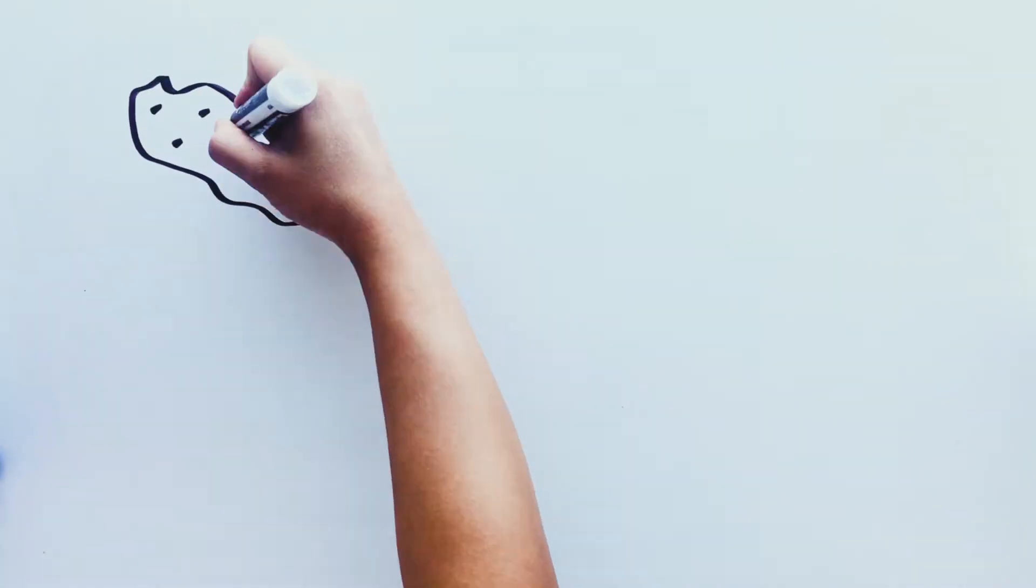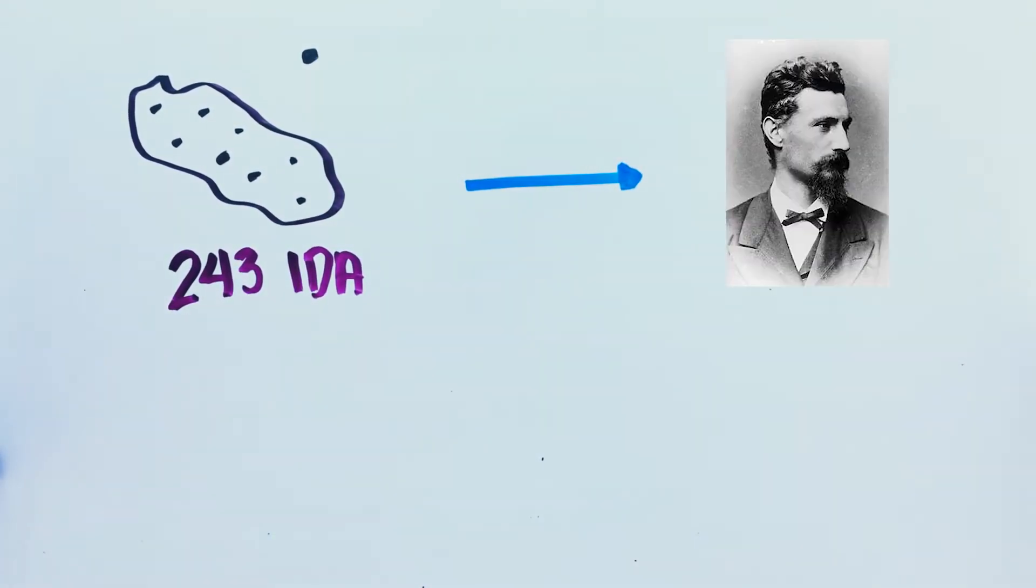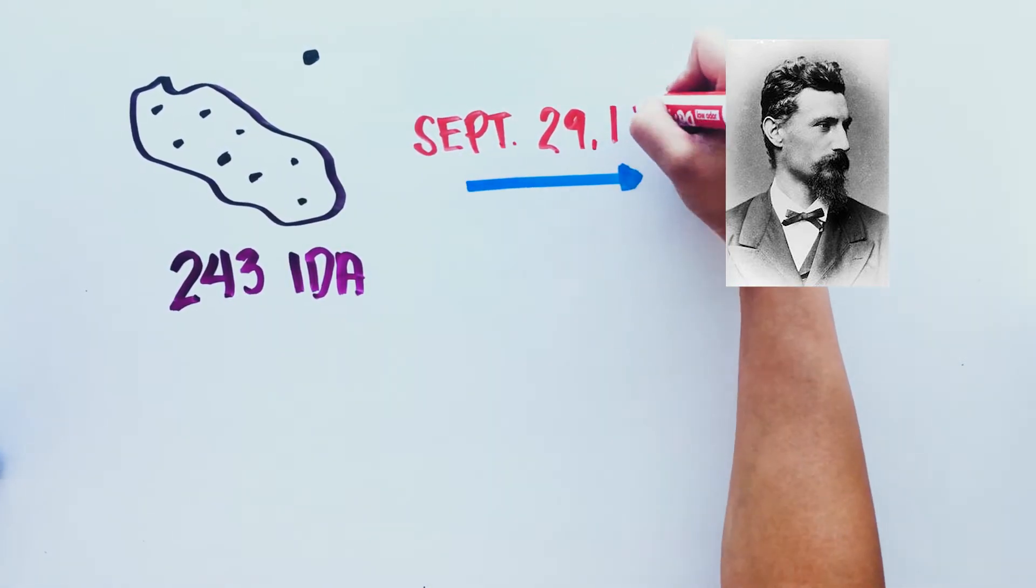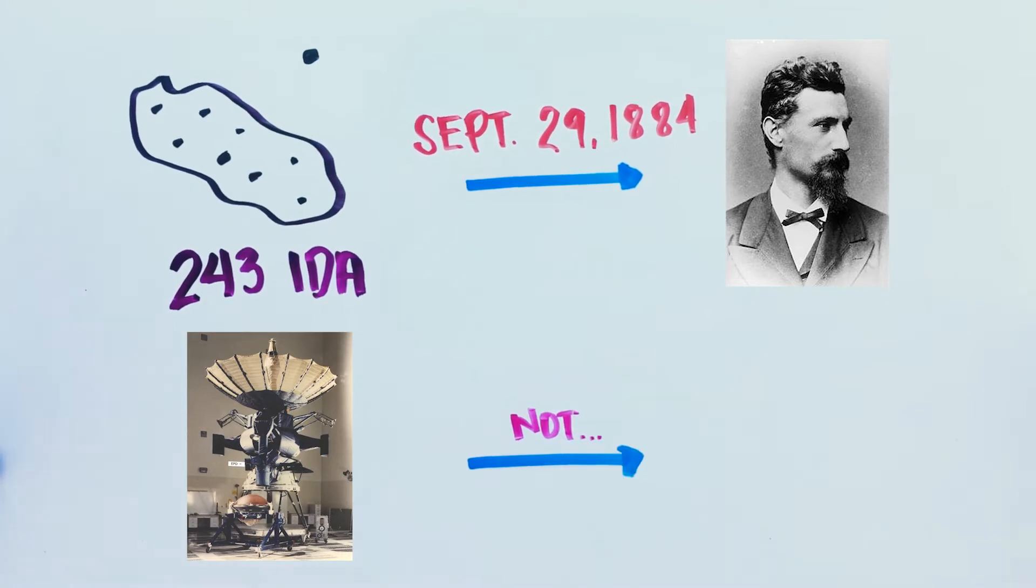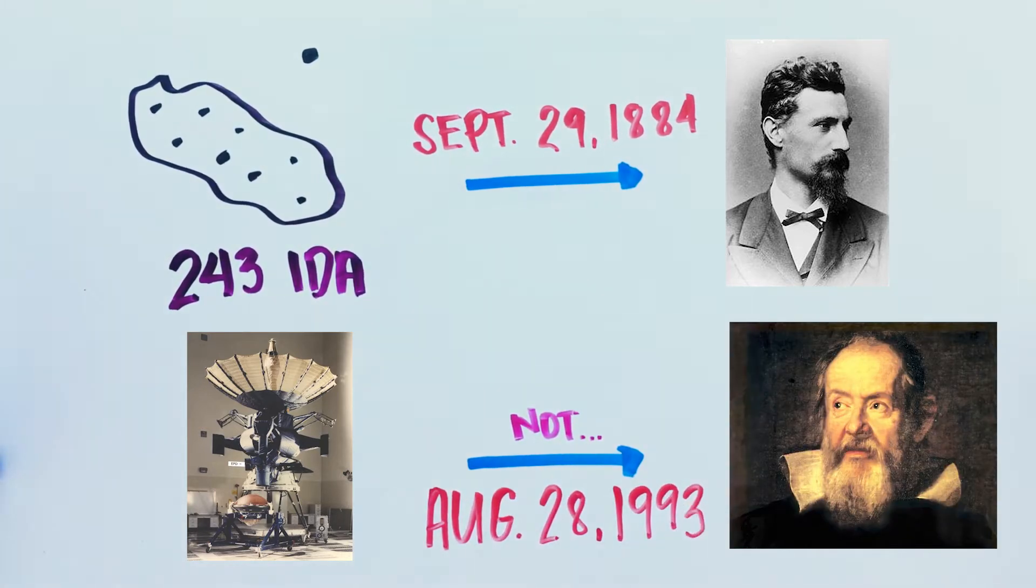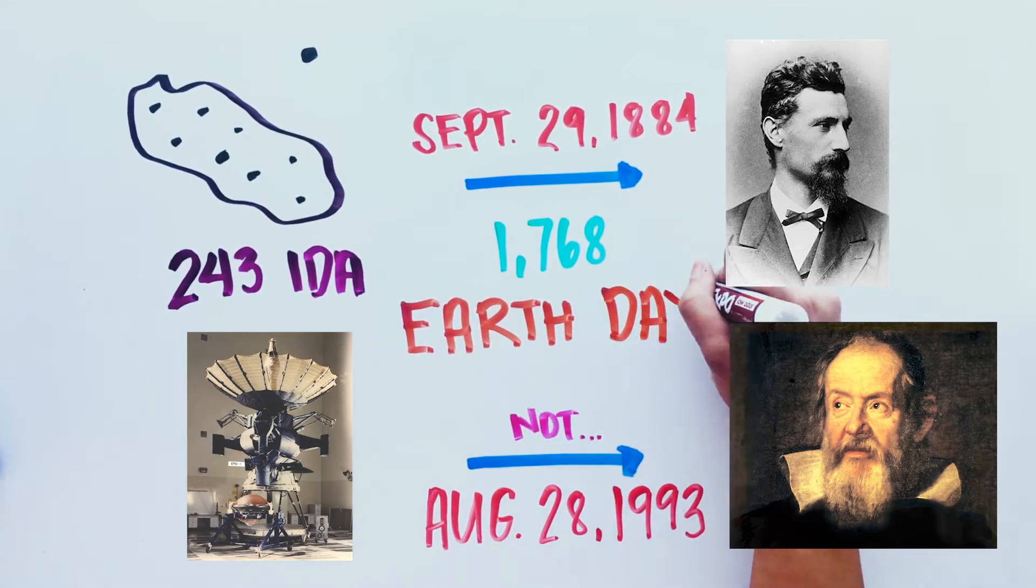There is an asteroid that has its own moon. 243 Ida was discovered by an Austrian astronomer, Johann Palisa, on September 29, 1884, and was visited by an unmanned spacecraft, Galileo, on August 28, 1993. It takes 1768 Earth days to orbit around the Sun, and it's shaped like a potato.